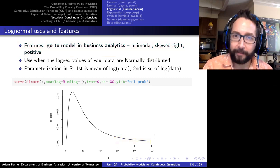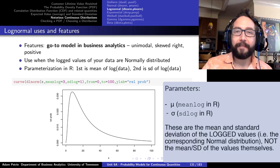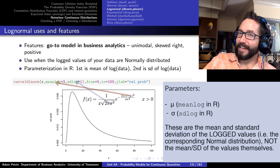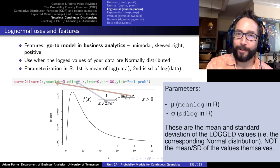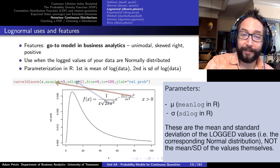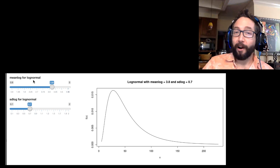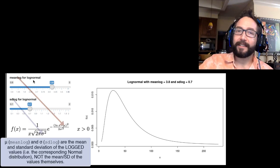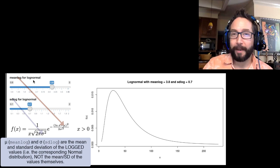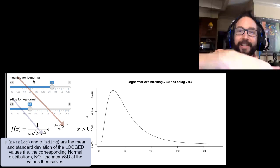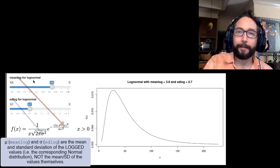The log normal distribution has two parameters — unfortunately called mu and sigma — but they are NOT the average and standard deviation of the log normal itself. They are the average and standard deviation of the corresponding normal distribution you'd get if you logged the values. On the Shiny app, in R the two parameters are meanlog and sdlog. They correspond to the mean and standard deviation of the normal distribution you'd get by examining the logs of these values.